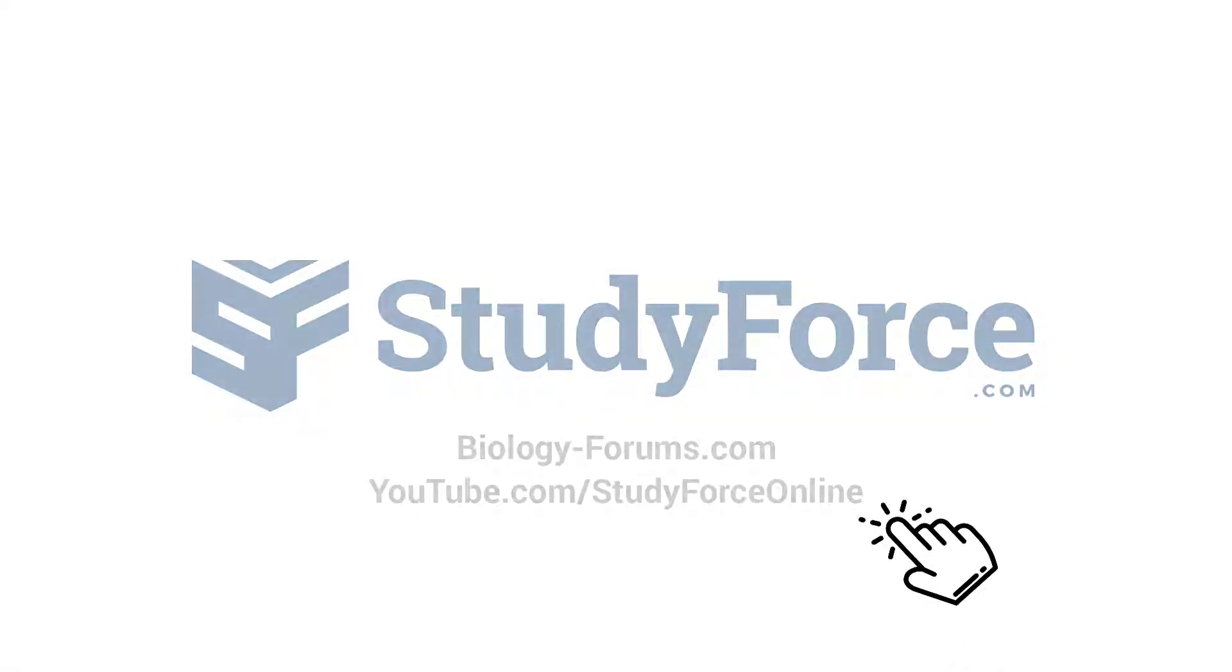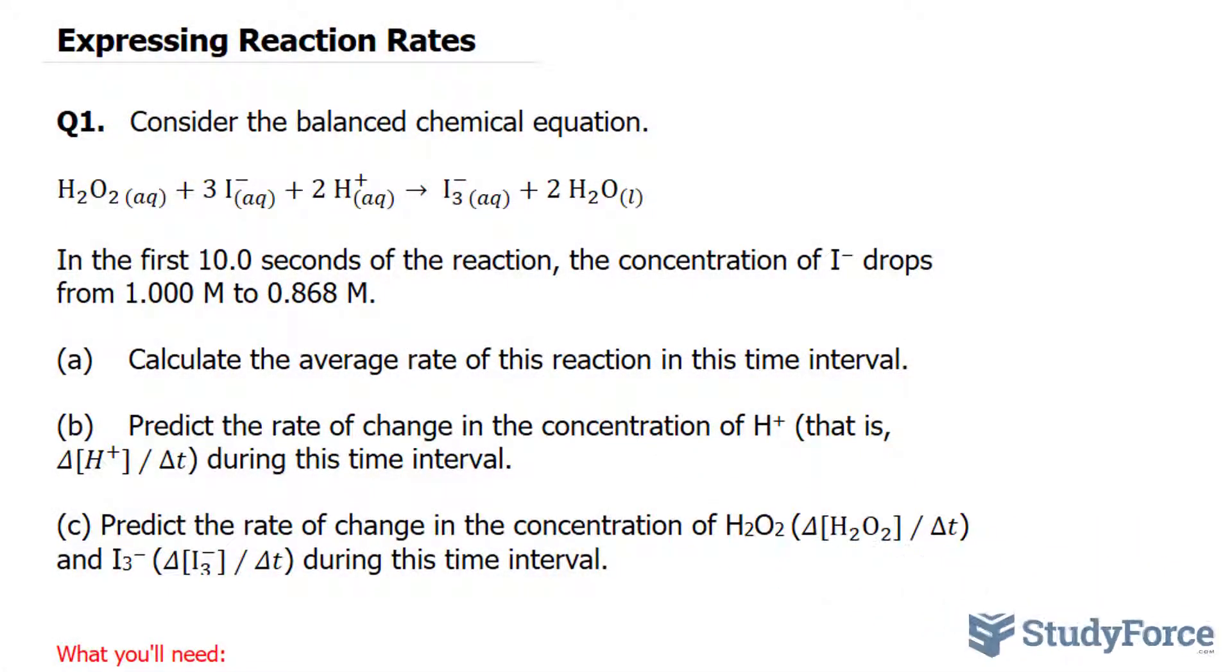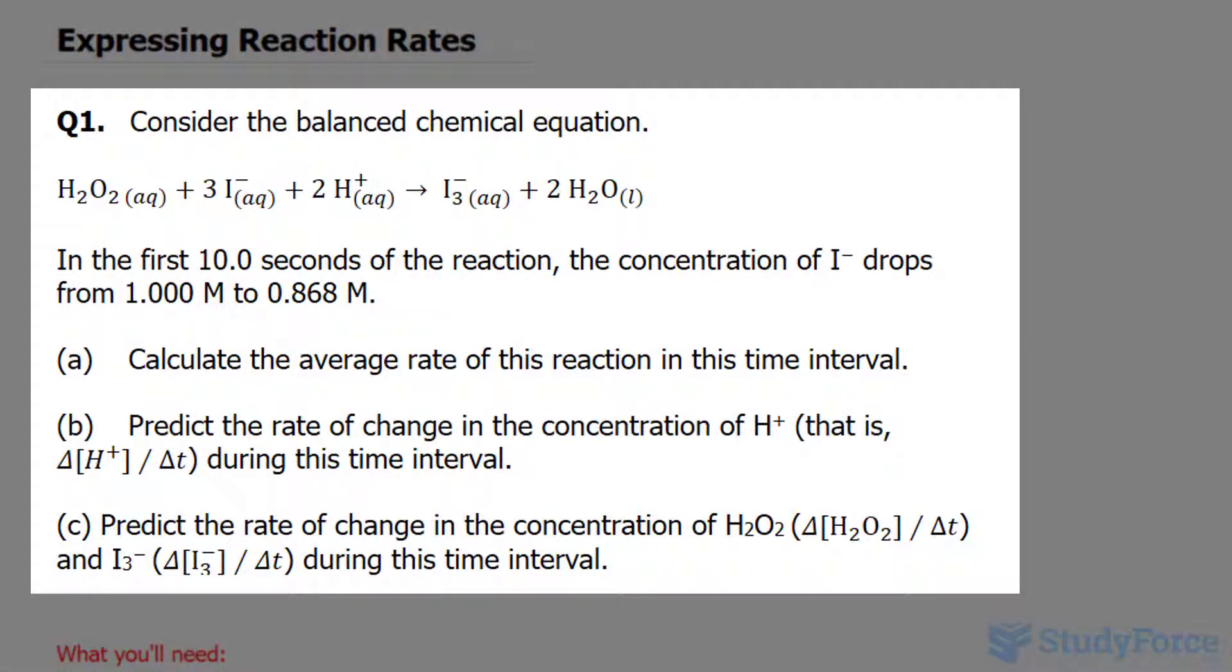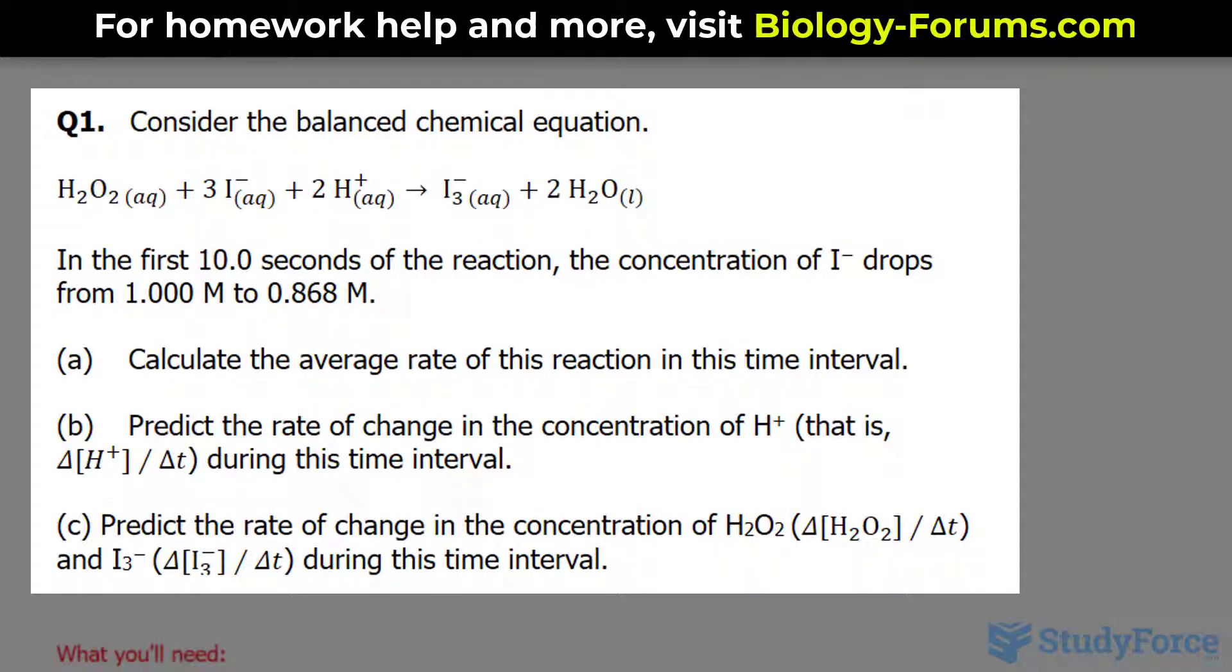In this lesson, we'll be discussing how to calculate the average rate of change and how to predict the rate of change of reactions. The question reads, consider the balanced chemical equation shown on your screen. In the first 10 seconds of the reaction, the concentration of the iodine anion drops from 1 molar to 0.868 molar.